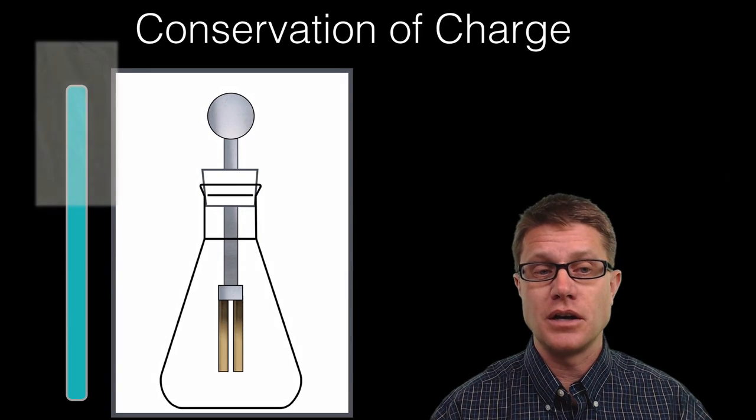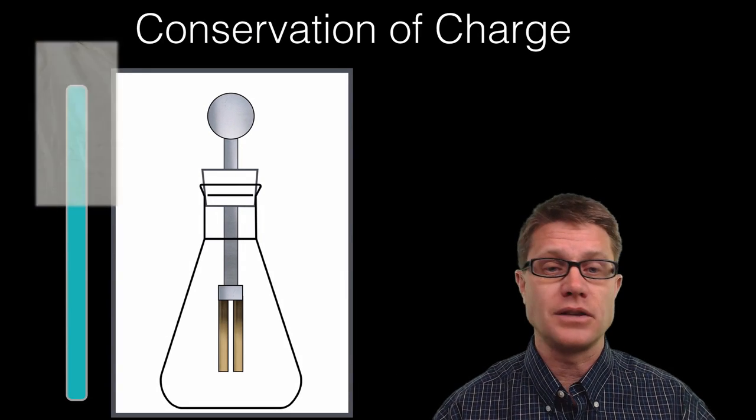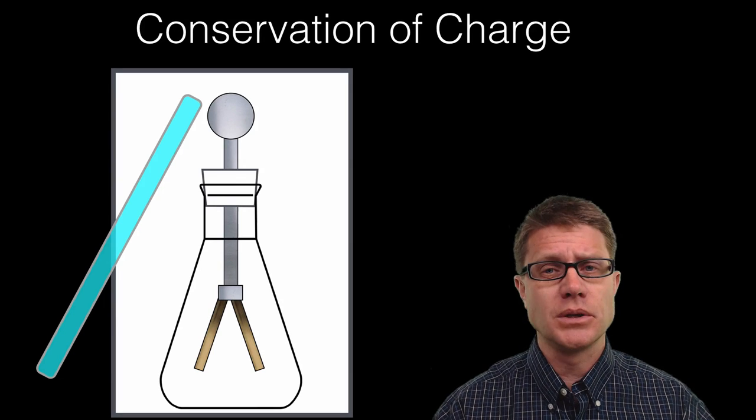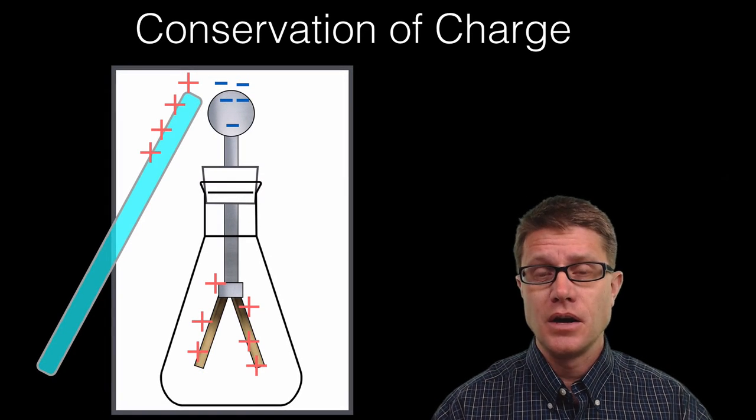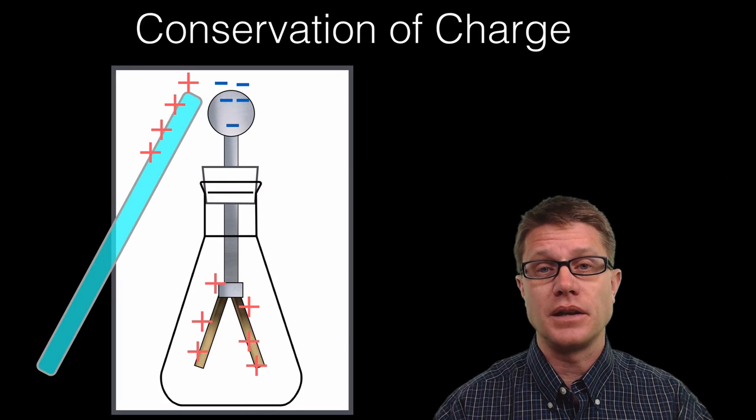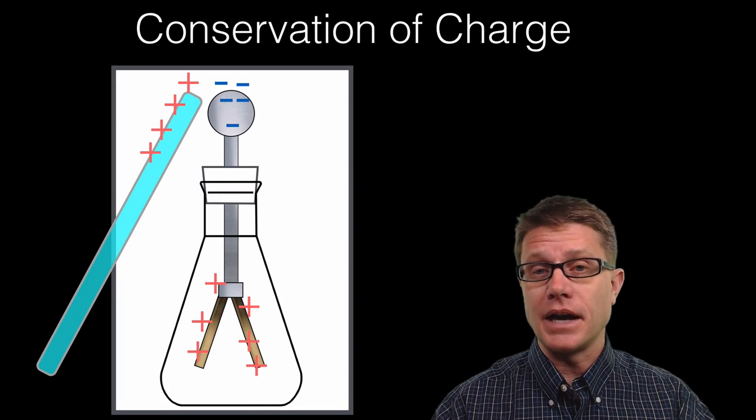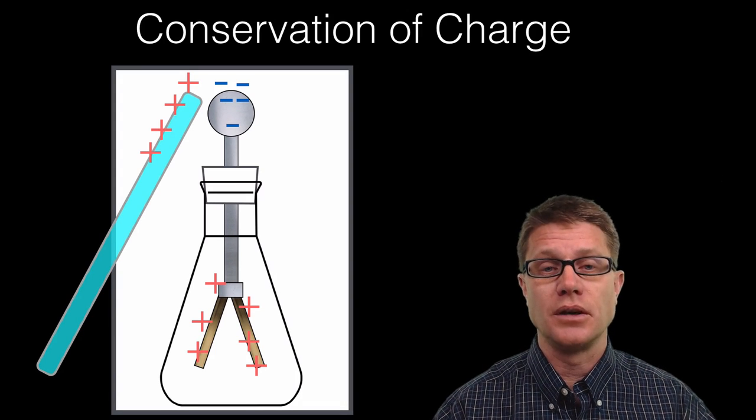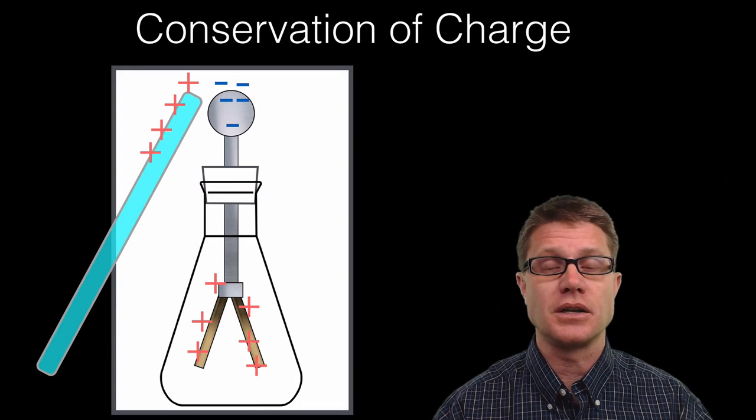If we were to look at conservation of charge, here I'm going to charge up this glass rod, bring it close to an electroscope. And you can see what's going on there. As we've discussed in previous videos, what's going on is the electrons are actually moving within the conductor of the electroscope. Now it's not like we're adding new charges to the system or we're pulling them away. They're just moving from one location to another. The charge is being conserved.